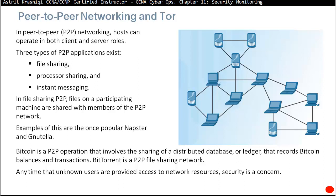Process sharing is another type of peer-to-peer networking — it combines processing power from many machines. For example, if a space navigation computation requires more power than one processor can provide, you can join many computers together to create a super machine. Instant messaging is also a peer-to-peer type of networking.